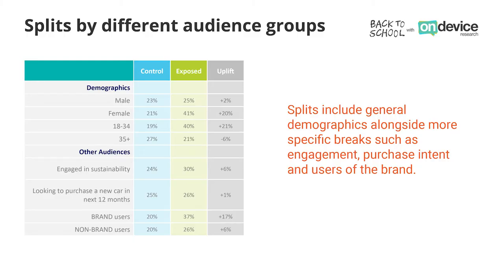As well as measuring success at an overall level, we can also split by audiences. We can split by different demographics such as male and female, and we can also split by age groups, for instance 18 to 34 or 35 plus. But we can also split by different types of audiences, such as brand users or non-brand users, and by attitudinal or behavioural segments — for instance, those that are engaged in sustainability.